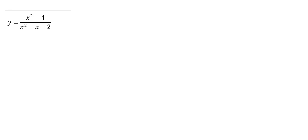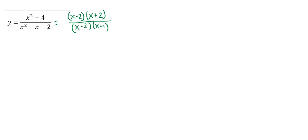First, for finding vertical asymptotes or holes, the step is to factor. I factor everything — the numerator and denominator. My numerator factors by difference of squares. My denominator factors by what multiplies to negative 2 and adds to negative 1. Once I have it factored, I know 2 and negative 1 are going to be the vertical asymptotes or holes.